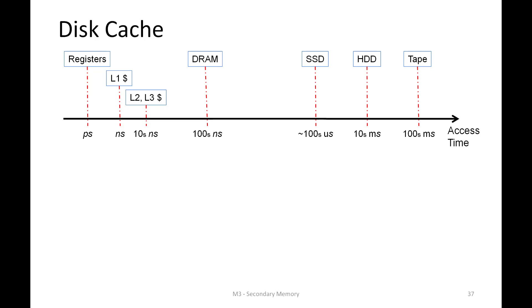Just to put things in perspective, if our processor is ticking at one gigahertz, then one millisecond would be equivalent to one million cycles. So if we are accessing the hard disk, we would typically wait for tens of millions of cycles to get the data back.